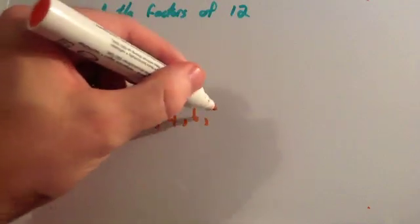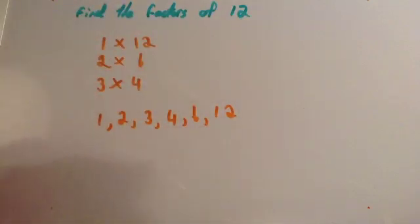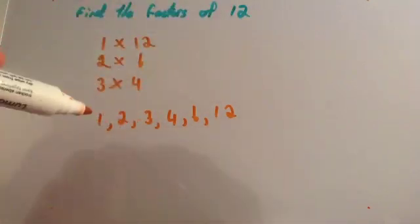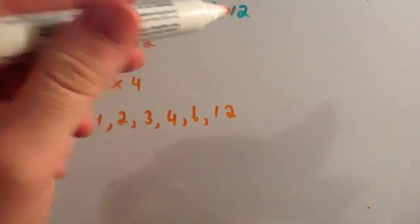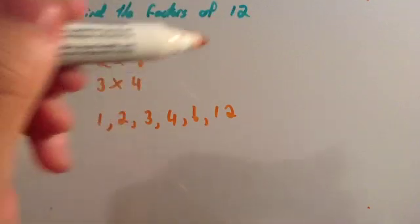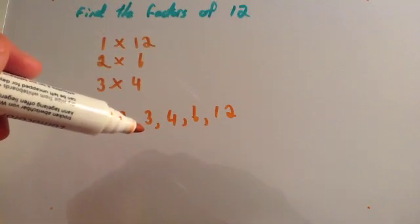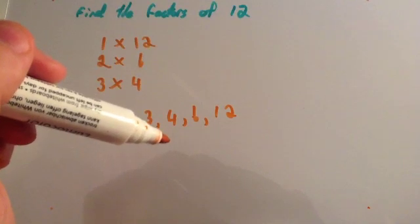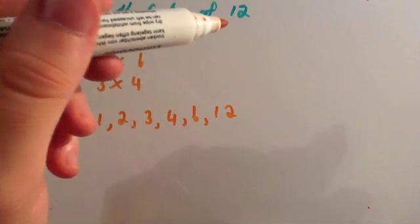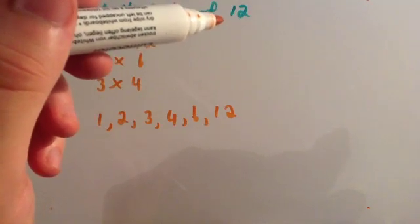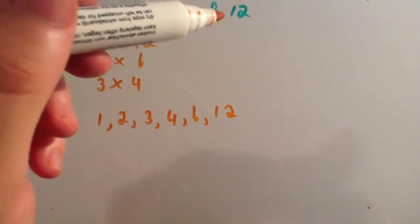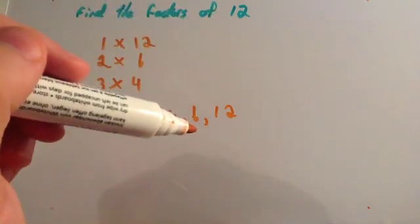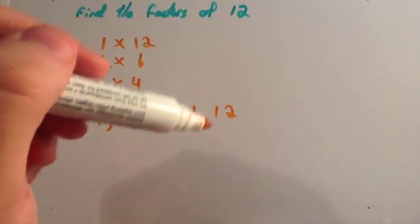Let's think about that. 12 can be divided by 1 to give you 12. 12 can be divided by 2 to give you 6. 12 can be divided by 3 to give you 4. 12 can be divided by 4 to give you 3. If you try to divide 12 by 5, it would be 2 remainder 2, so 5 isn't a factor. 12 can be divided by 6 to give you 2.